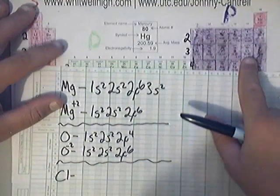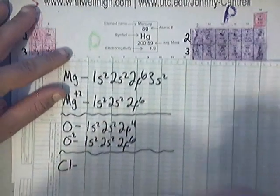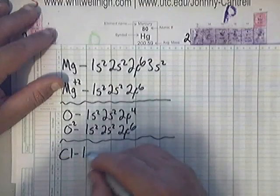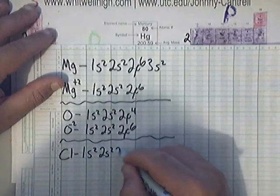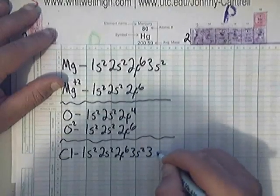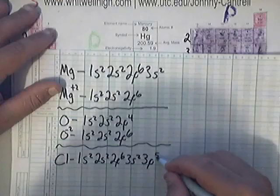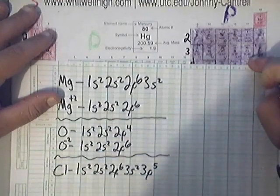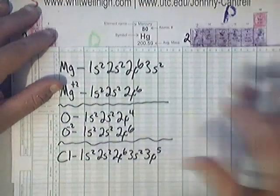Chlorine, its location is the 3P5 location, so keep that in mind when you write these. 1S2, 2S2, 2P6, 3S2, and finally 3P5. Now, that's plain chlorine. That's 3P5. That's neutral chlorine, what I mean by plain.